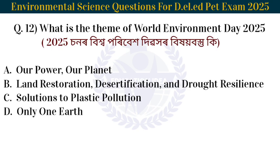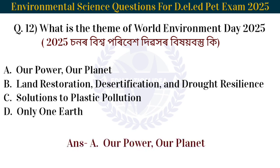Next question: What is the theme of World Environment Day 2025? 2000 possession or 200 poribek dibokar vikhoi bostu ki. The answer is 'Our Power, Our Planet'. The theme of World Environment Day 2025 is 'Our Power, Our Planet'.